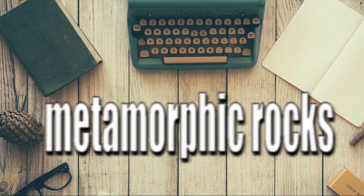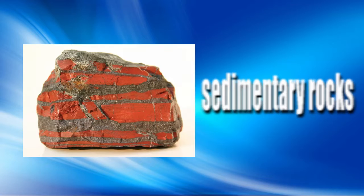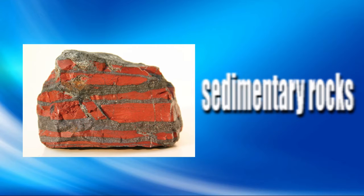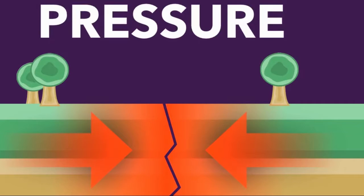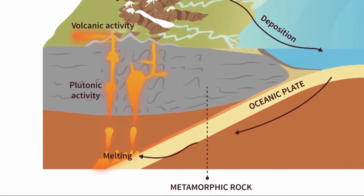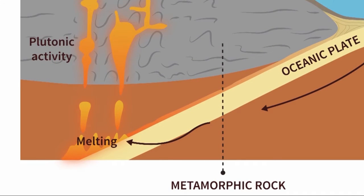Metamorphic rock is a combination of igneous rock and sedimentary rocks. Igneous rocks and sedimentary rocks sometimes change their structure under intense heat and pressure — when that occurs, metamorphic rocks are formed. This change occurs without any melting of the rock. The word 'metamorphic' comes from 'metamorphosis,' which means change.